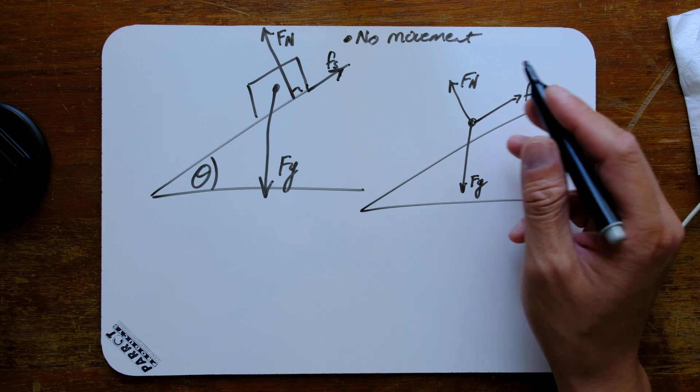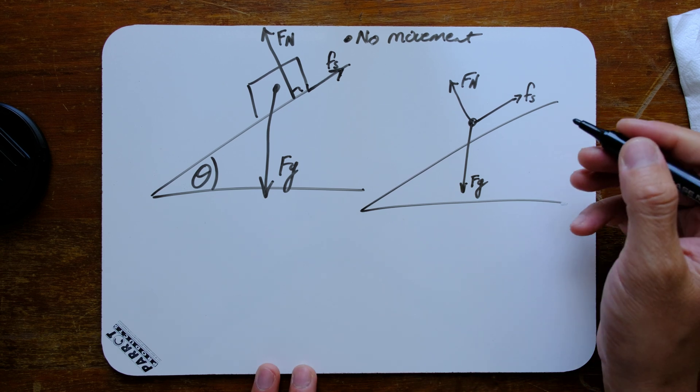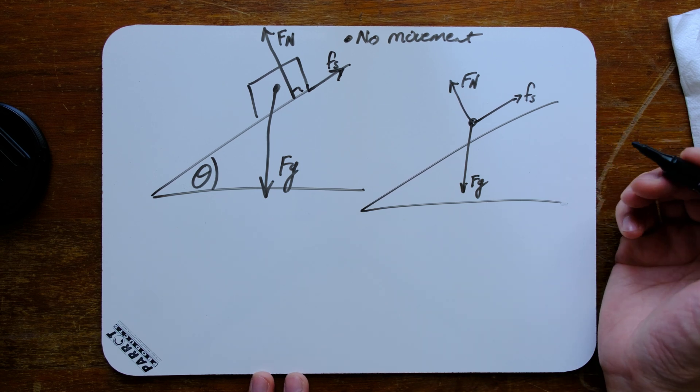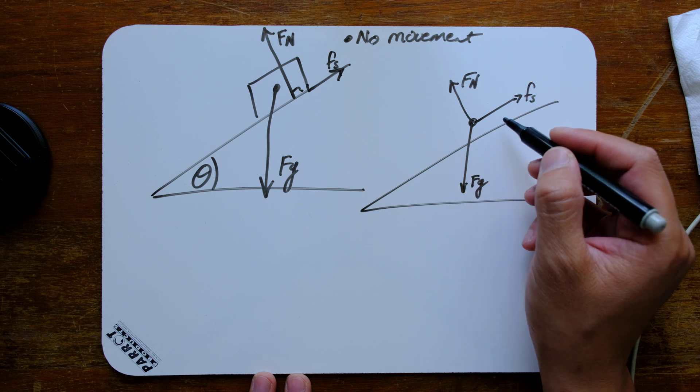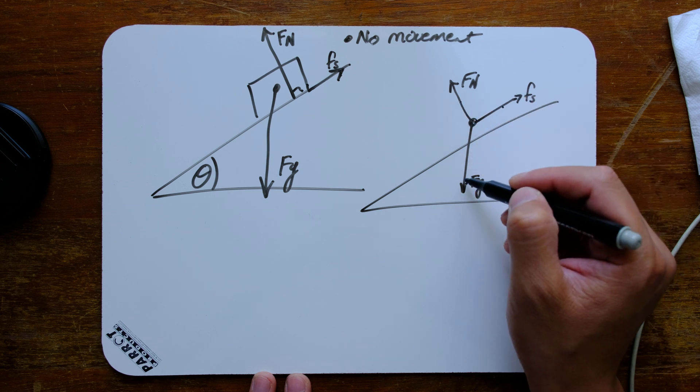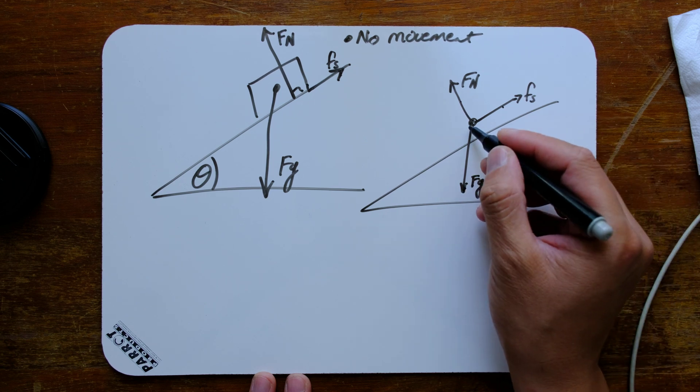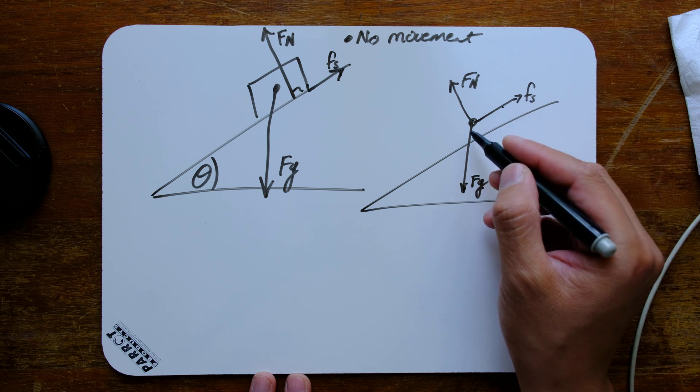Now the problem with this situation is that now none of these forces are acting in opposite directions to another. That means we have to break them into their components. It doesn't make sense to break fs and fn into a component that is in the same direction as fg, rather break fg into the components opposite of fn and fs.